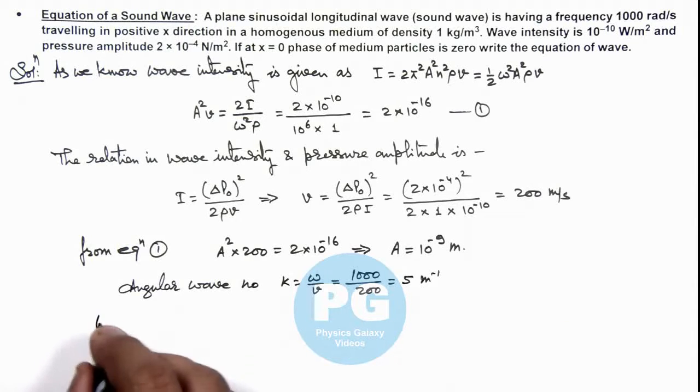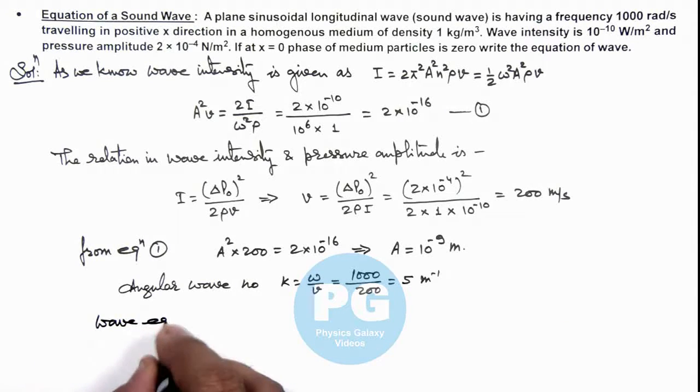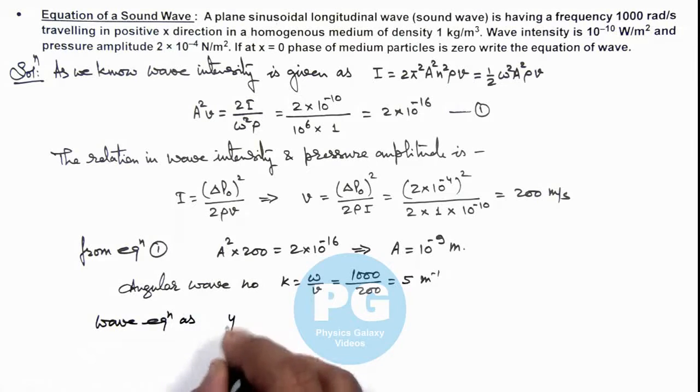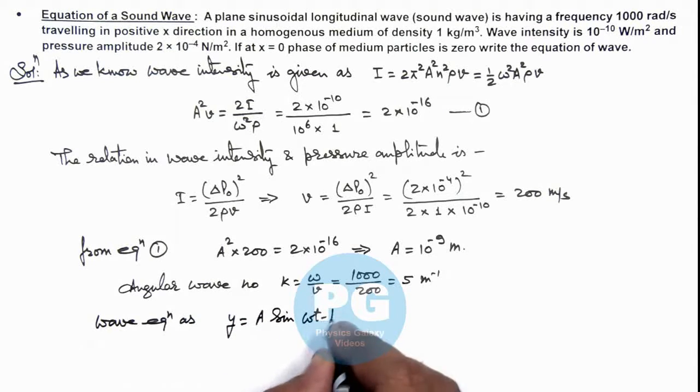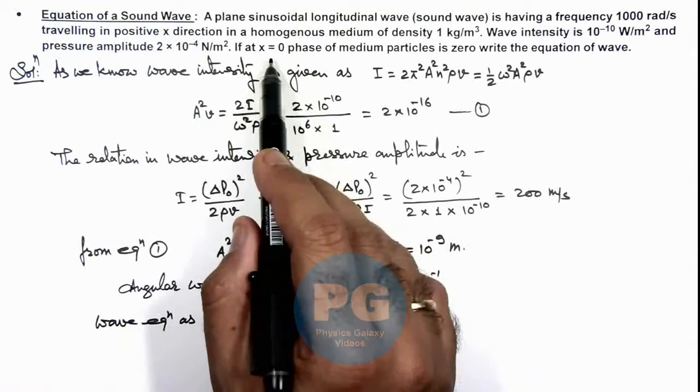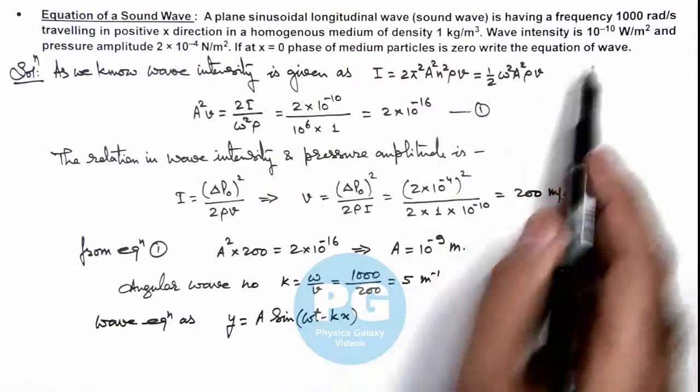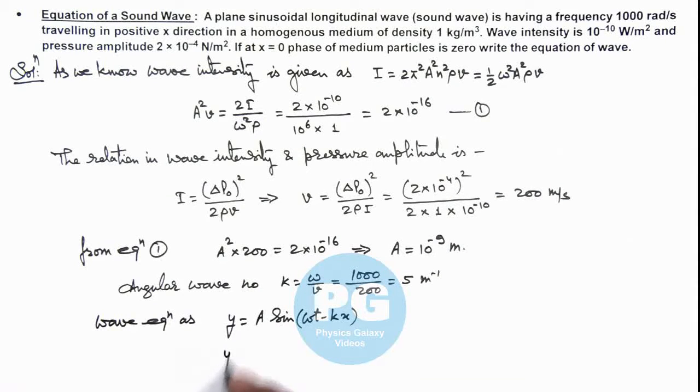So in this situation we can directly write the wave equation as y is equal to A sine of ωt minus kx, as we are given that x equal to zero phase is also zero. So here value of y is 10 to power minus 9 sine of 1000t minus 5x, which is given in meter and that is the result of this problem.